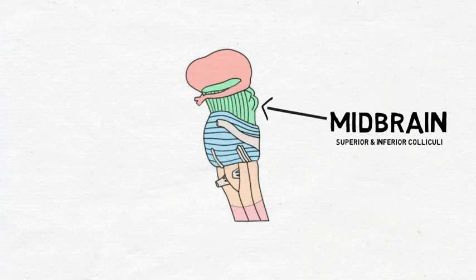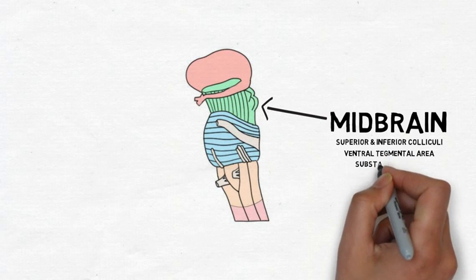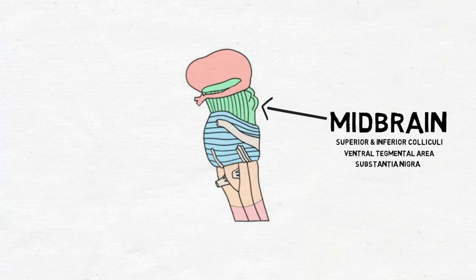The superior colliculi are involved in eye movements and visual processing, while the inferior colliculi are involved in auditory processing. The midbrain also contains major dopamine-producing nuclei of the brain: the ventral tegmental area and the substantia nigra. Among other functions, the ventral tegmental area is involved in motivation and reward, while the substantia nigra plays an important role in movement.